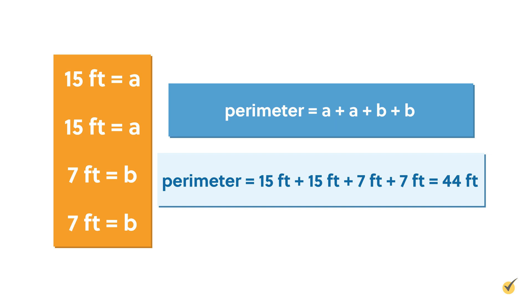Alternatively, since we know that there are four sides and that there are two sets of identical sides, we can simplify our formula to perimeter equals 2a plus 2b.